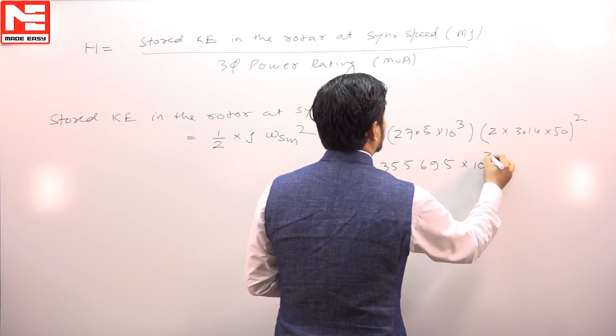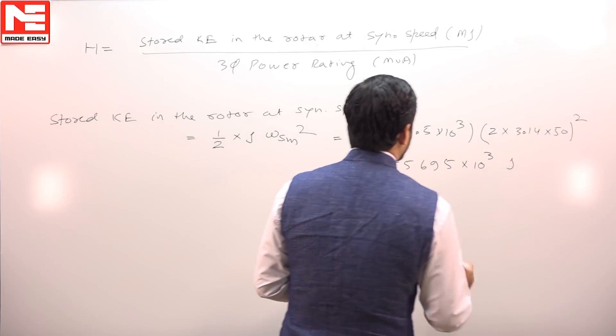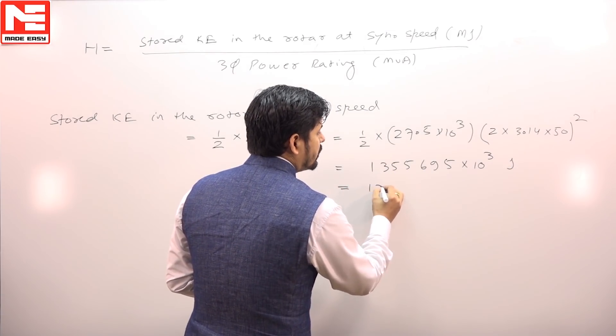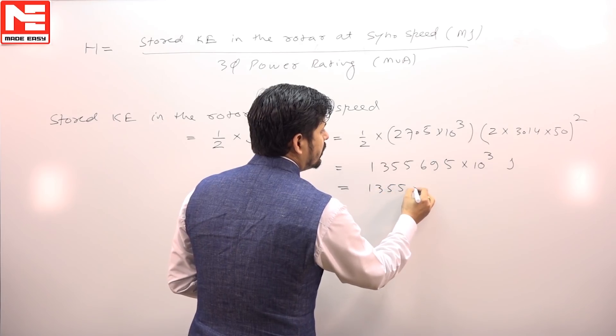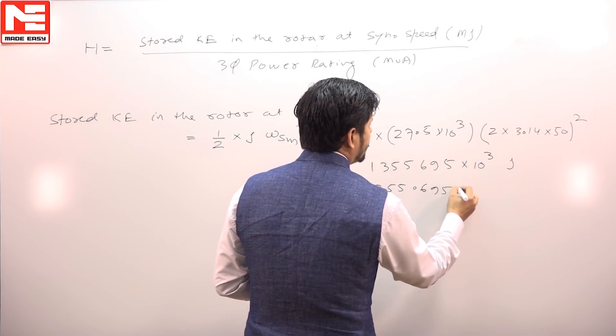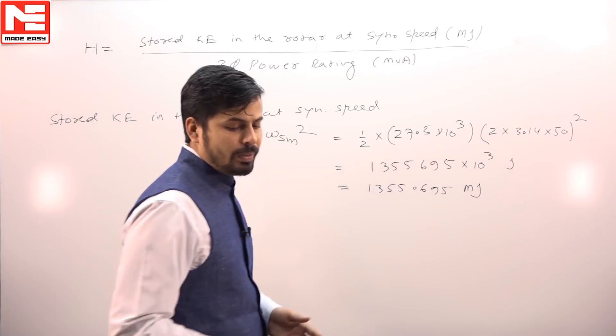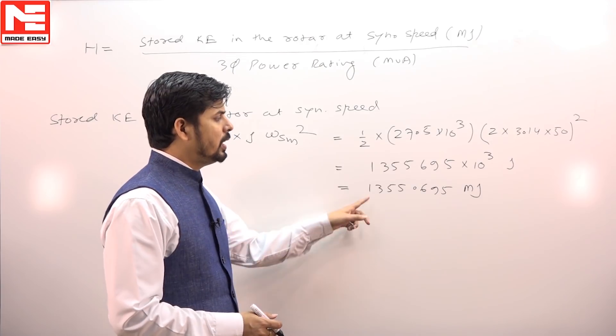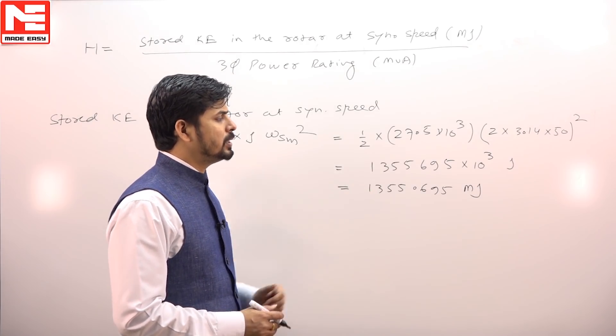Which is 1,355.695 megajoules. So we have calculated the stored kinetic energy in the rotor at synchronous speed in megajoules.